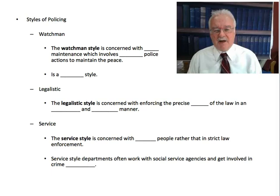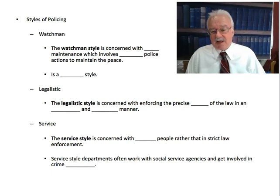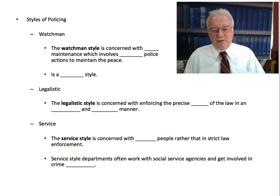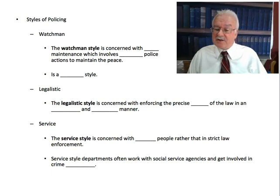The legalistic style was supposedly impartial — the idea being they didn't want to be seen as doing the bidding of politicians like in the political era. The legalistic style was pretty good at controlling crime; however, it doesn't do much for police-community relations because they're very much like robots and don't stop to talk. The police then moved into the service style, starting around the 1980s, which is concerned with serving people rather than strict law enforcement. Service-style departments often work with social service agencies and do a lot of crime prevention.